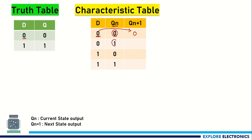Similarly, even if Qn is 1 — means current state of the output is 1 — and we are providing 0, the output will be 0 again. Whatever we give from D will be the output in the next stage. If the current state of output is 0 and we provide 1, this 1 will be the output in the next stage. Even if 1 is in the output and we provide 1 at the input, we will get 1 as output. This completes the characteristic table.